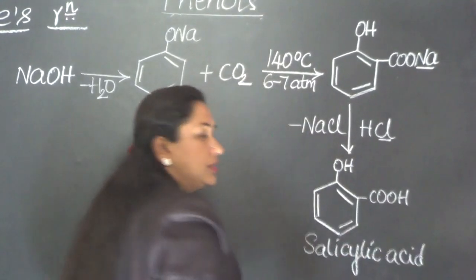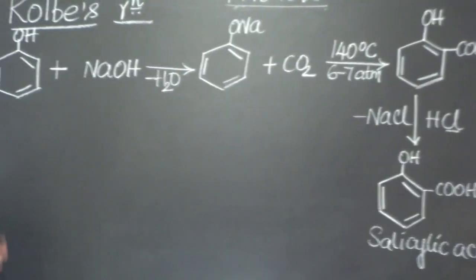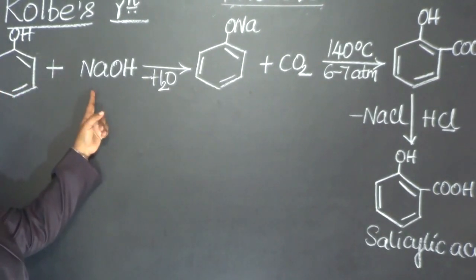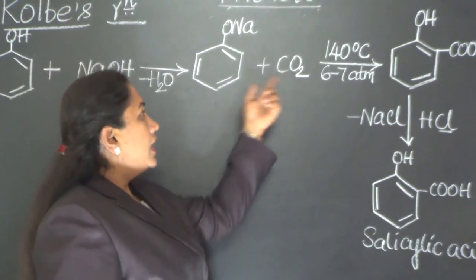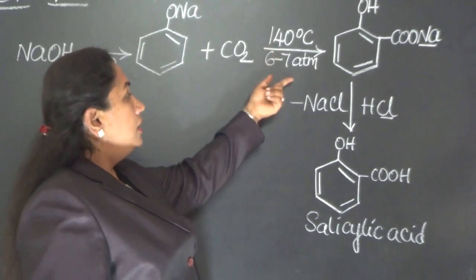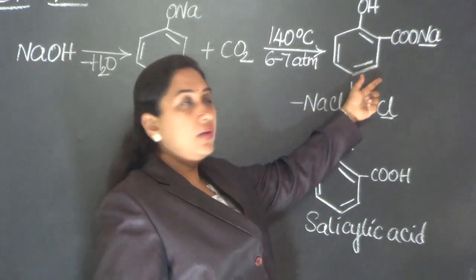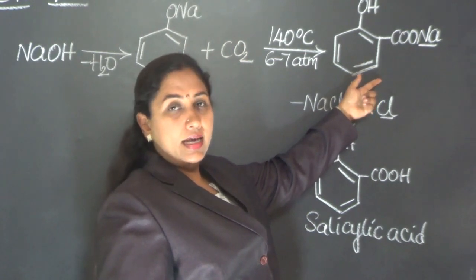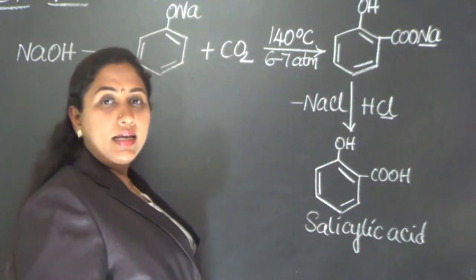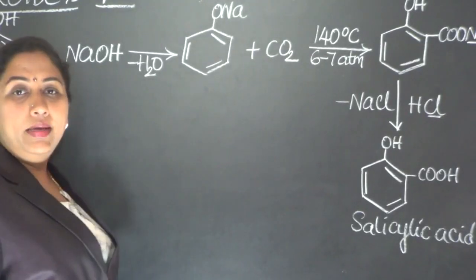The IUPAC name of this compound is 2-hydroxybenzoic acid. I'll go through a quick repetition. Phenol is converted into sodium phenate by treating it with sodium hydroxide. Carbon dioxide gas is bubbled through sodium phenate at a temperature of 140 degree Celsius, applying 6 to 7 atmospheric pressure, which will yield us sodium salt of salicylic acid. This is acidified further with HCl to obtain salicylic acid. This is the method of obtaining salicylic acid from Kolbe's reaction.